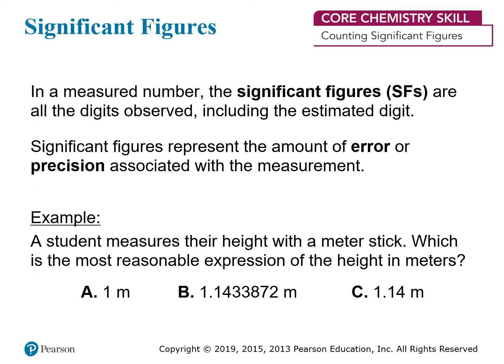This brings us to the concept of significant figures or significant digits, which I mentioned briefly in the last chapter. The significant figures in a measurement are the digits that we can confidently report based on the precision of the instrument. Take this example: a student measures their height with a meter stick. Which of these choices makes the most sense for how the results of this measurement should be reported?